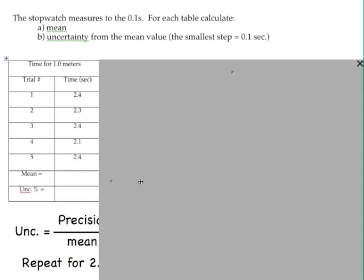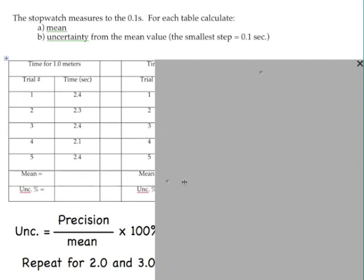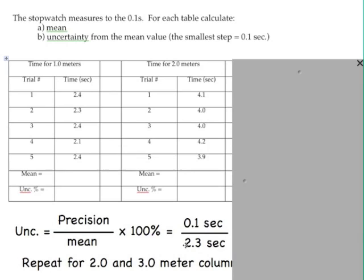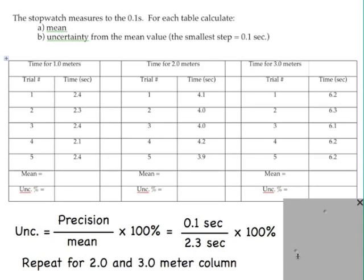And so to calculate the uncertainty, we need to take the precision of the measurement, divide it by the mean, multiply it by 100 to make it a percent. So we've already discussed this. The precision is 0.1. The mean, when you calculate it, is 2.3 seconds. And so all we have to do is put that in your calculator, multiply it by 100, and go ahead and do that. If you want to pause the video, you can.